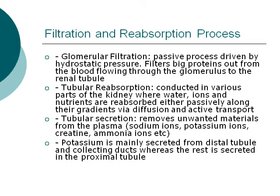Tubular secretion removes unwanted materials from the plasma. This includes sodium ions, potassium ions, creatinine, ammonia ions, and so on. Potassium is mainly secreted from the distal tubule and collecting ducts, whereas the rest of the above are secreted in the proximal tubule.